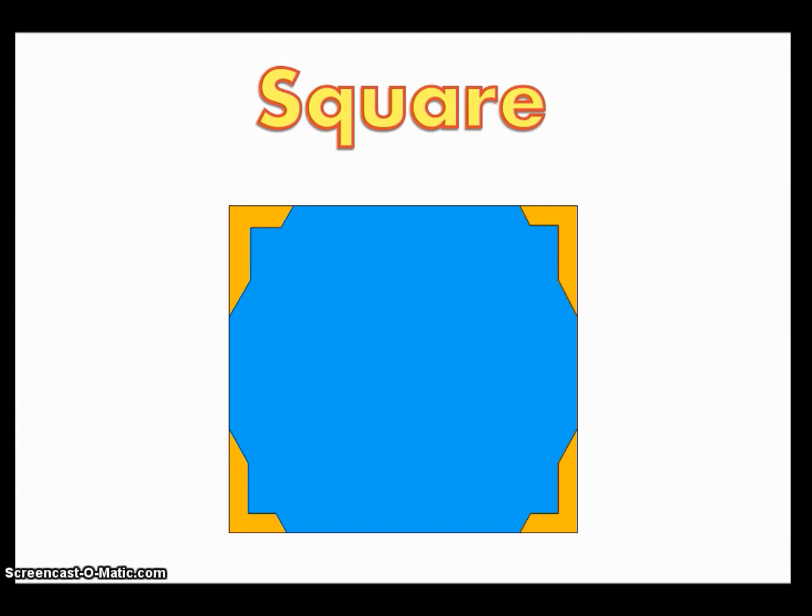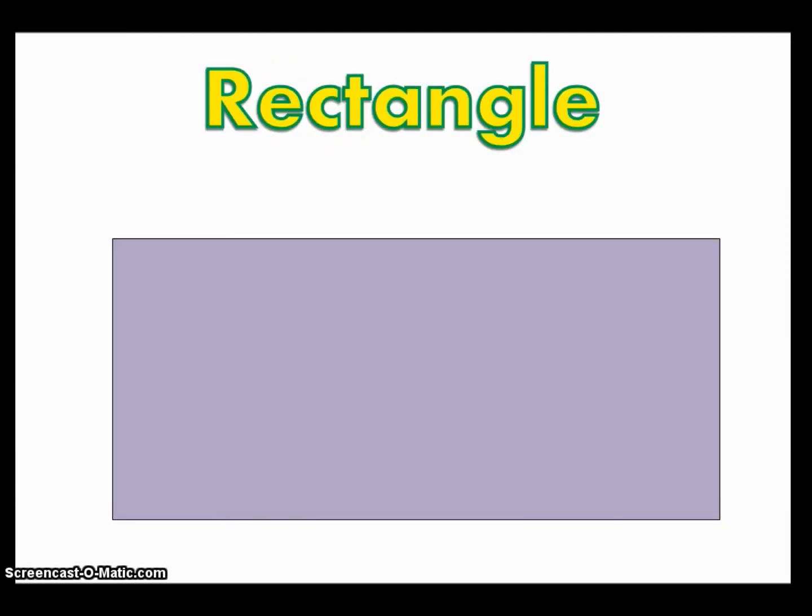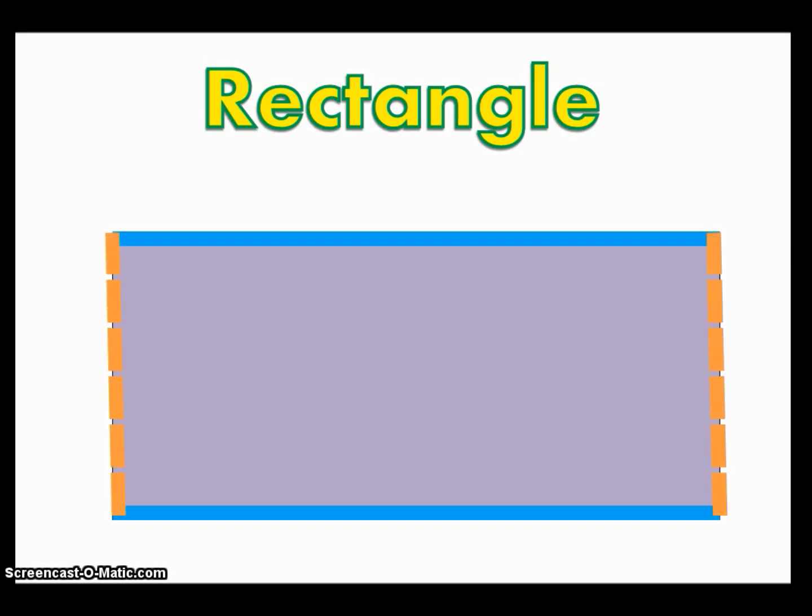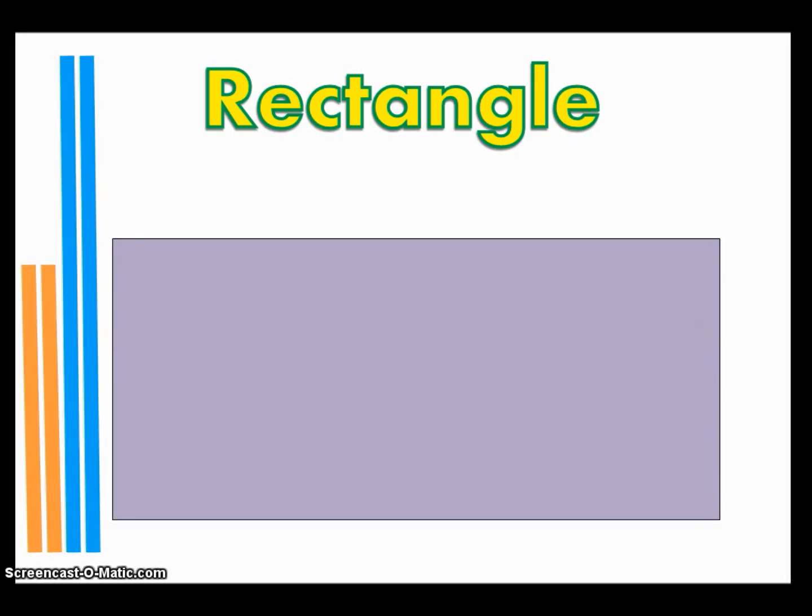Another quadrilateral that you've probably seen before is a rectangle. A rectangle, just like squares, they have four right angles. They also have two sets of parallel lines, right here and right here. But unlike a square, rectangles, if you were to take their sides off, their sides are not all equal to each other.